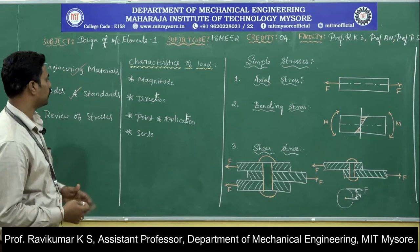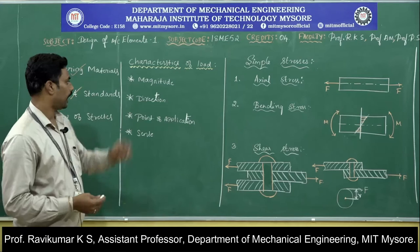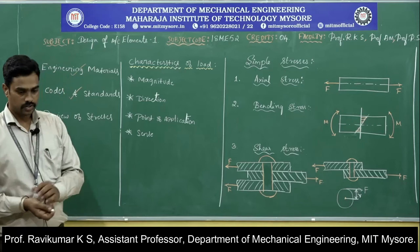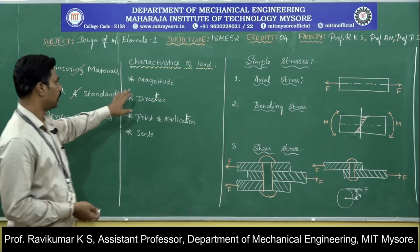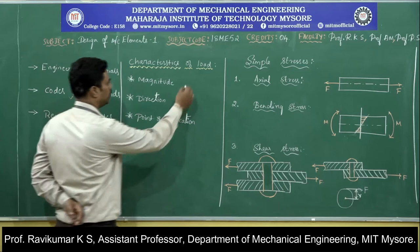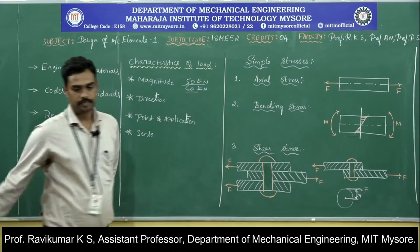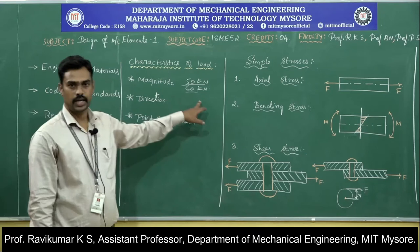There are four characteristics of a load: magnitude, direction, point of application, and sense. Magnitude defines the amount or quantity of load to be applied on the material — for example, 50 kN or 60 kN. It is a scalar quantity, having only magnitude.